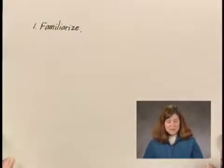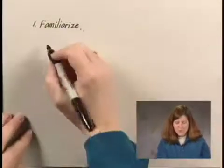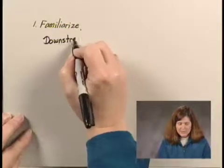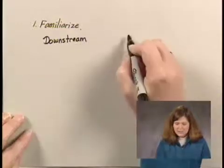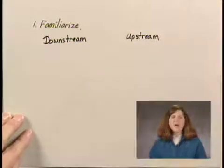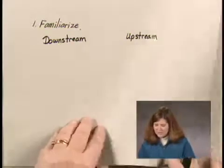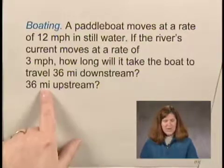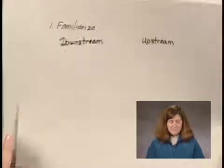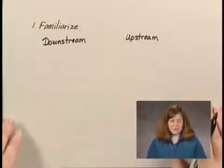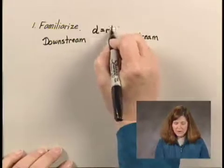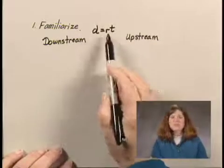I'm going to work both of these situations in parallel — the downstream situation and the upstream situation. In both cases we're traveling 36 miles, but the rates are not going to be the same and the times are not going to be the same. Since we're dealing with motion, we're going to be using the motion formula D equals RT, or distance equals rate times time.